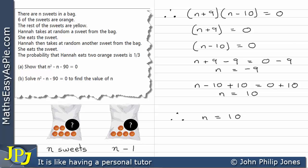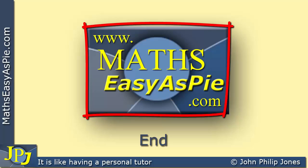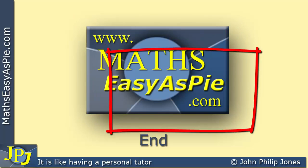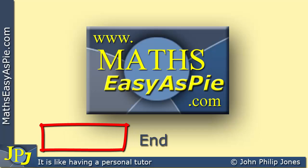We now know there are 10 sweets in the bag. Since six of them were orange, four must have been yellow — though this wasn't asked by the question. Check out the supporting website for these videos, consider subscribing to the YouTube channel for automatic updates when new videos are uploaded, and also consider subscribing to the Google Plus Circle related to these videos.